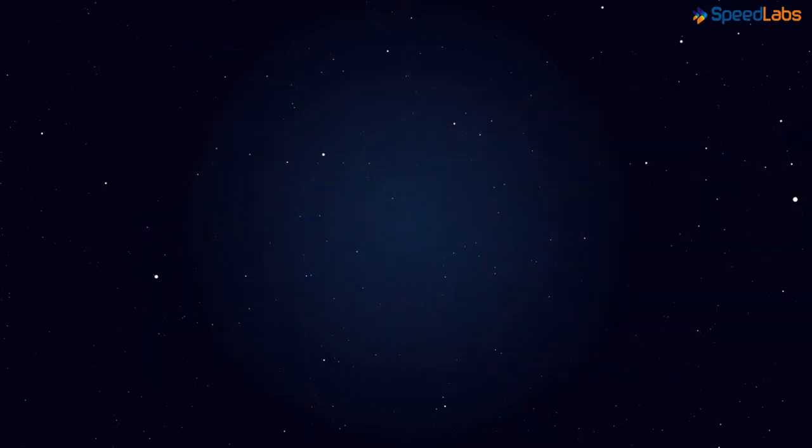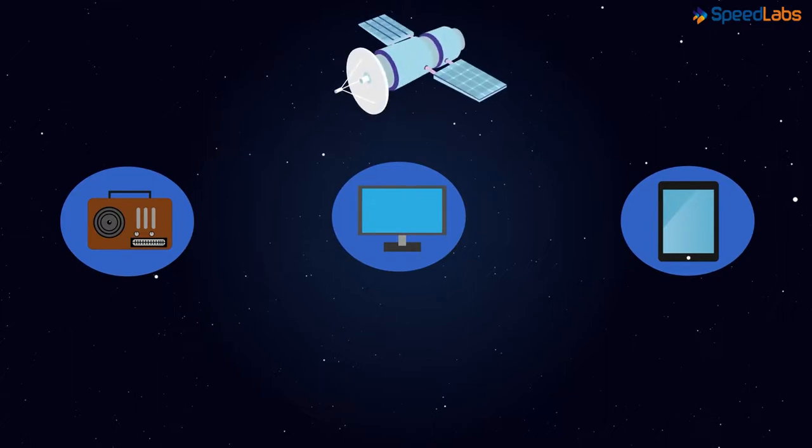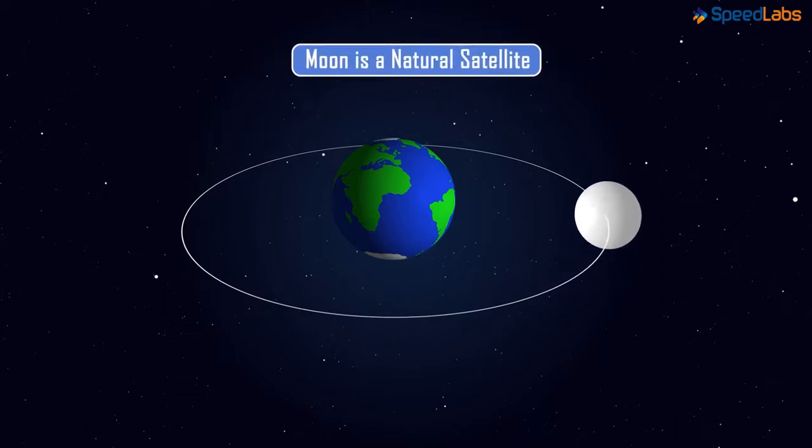Remember where we get our TV, radio and GPS signals from? That's right! We get them from satellites. When we talked about the moon revolving around the earth, we'd seen that it's a satellite of the earth. Well, the moon is a satellite alright, but a natural satellite.